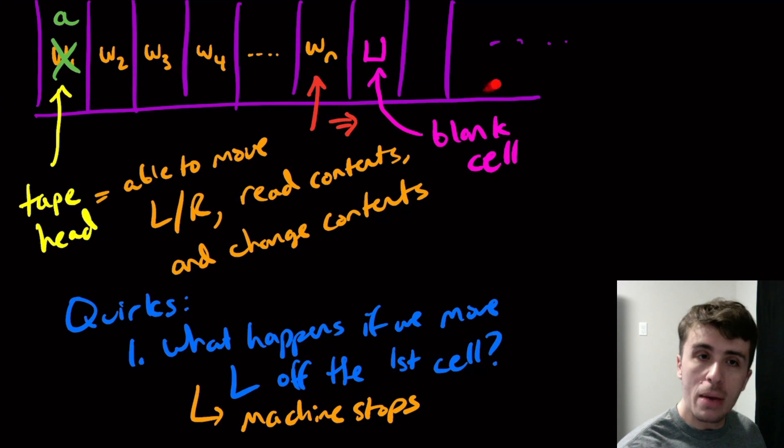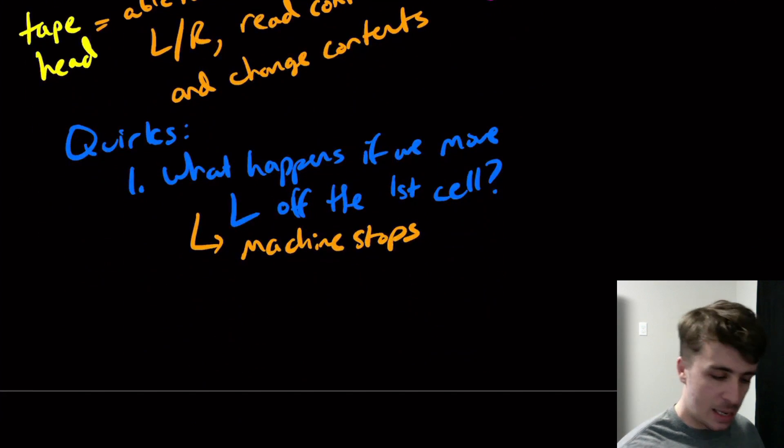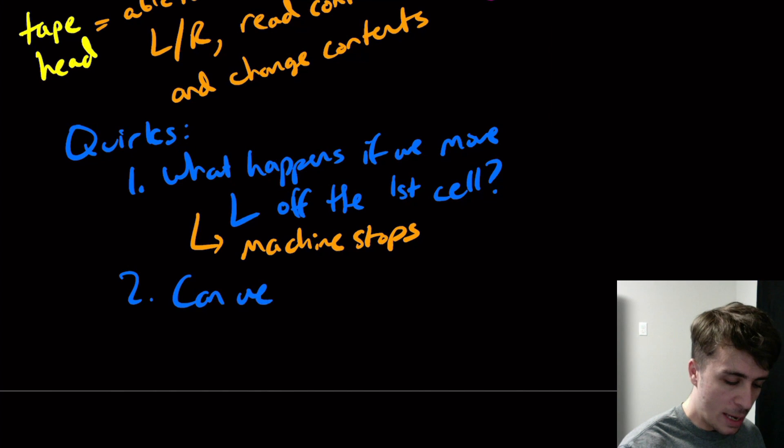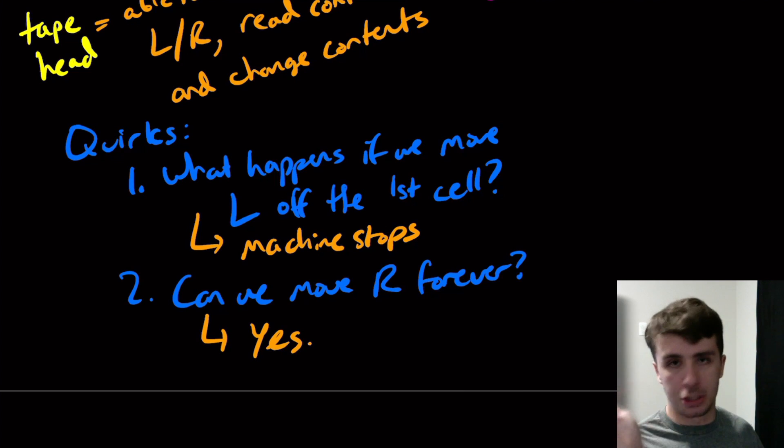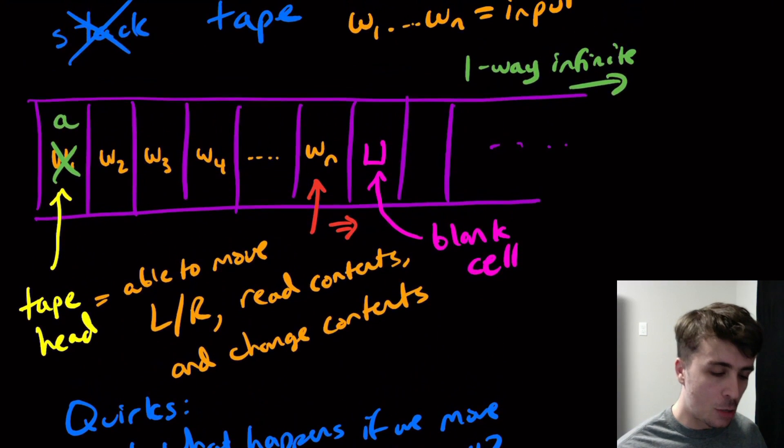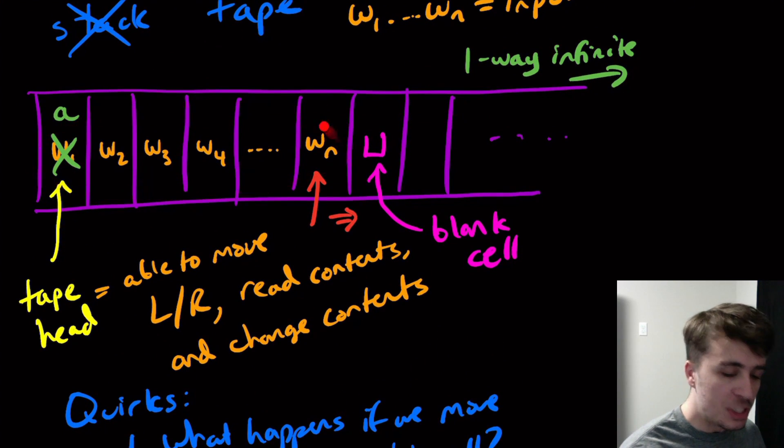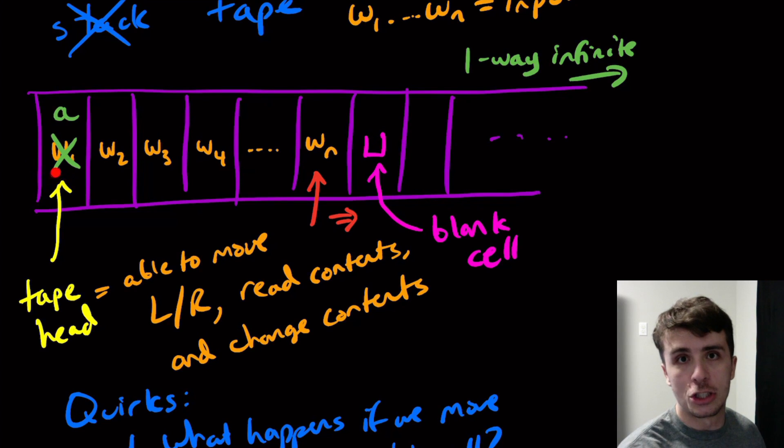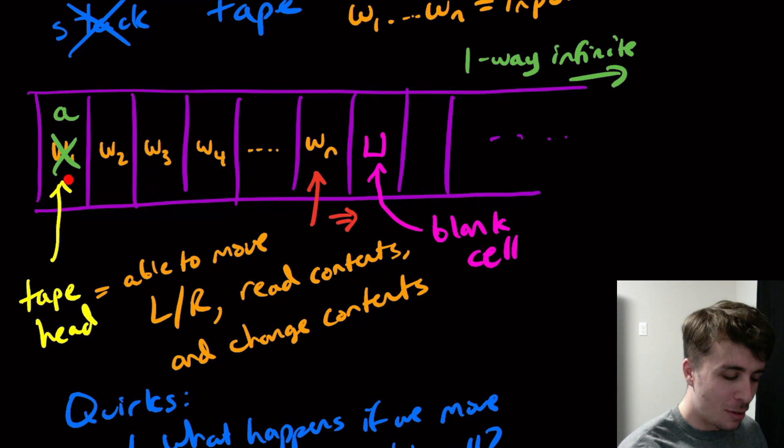Another quirk: could we potentially keep going right forever? The answer is yes. I'm not going to restrict you from just keep moving right. You could reason that the machine doesn't really do anything at that point. We're going to have to take a look at that when we define the model precisely.